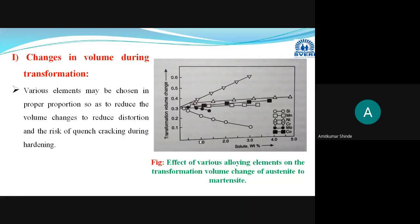In the next lecture, we will discuss the classification of plain carbon steels and the specific effect of adding particular alloying elements — which properties change when a specific element like vanadium is added to steel.